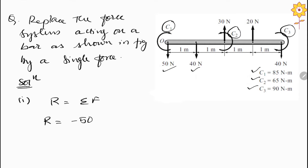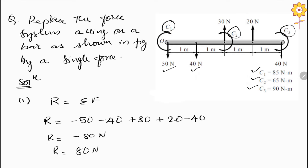The first force is 50 N acting downward, so it is negative. The second force is 40 N acting downward, so minus 40. The third force is 30 N acting upward, so plus 30. The fourth force is 20 N acting upward, so plus 20. The fifth force is 40 N acting downward, so minus 40. Calculating this gives R = minus 80 Newton.